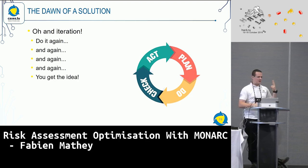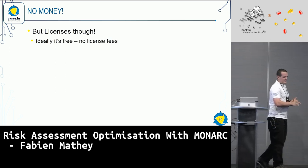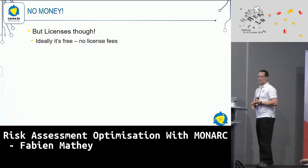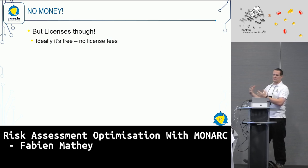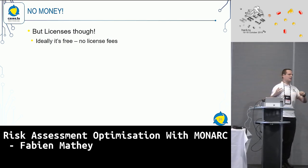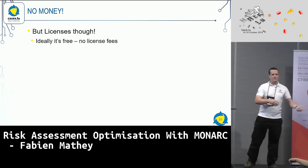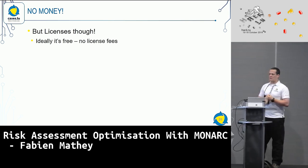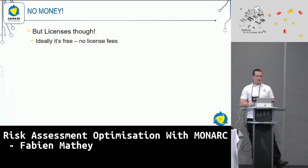There's also the iteration part — do it again and again, which is basically like the PDCA model. The next big one was licenses, and with money being an issue, licenses are always a tricky part, because either they are free and difficult to use, or they are very cool and you can do everything with them, but they're really expensive. So we thought it would be a good idea to not charge any license fees.